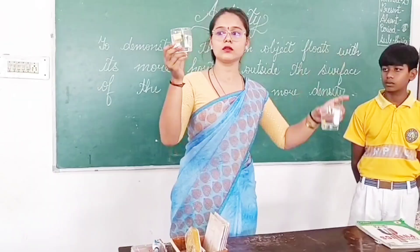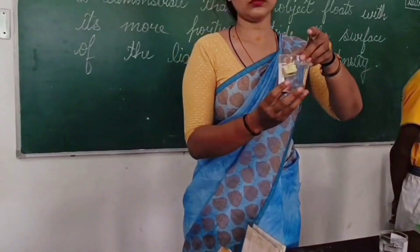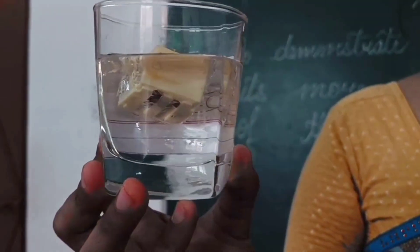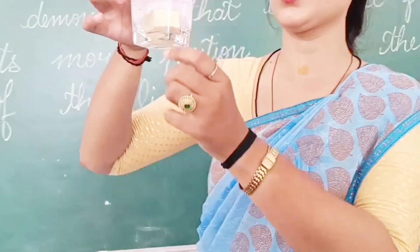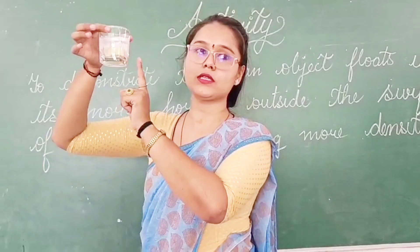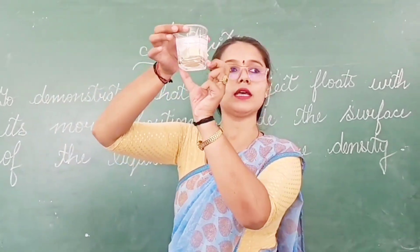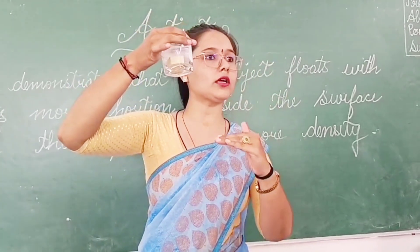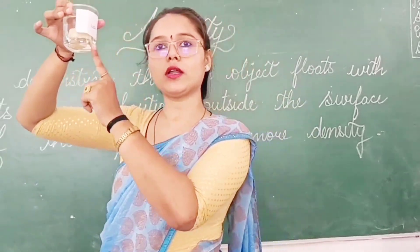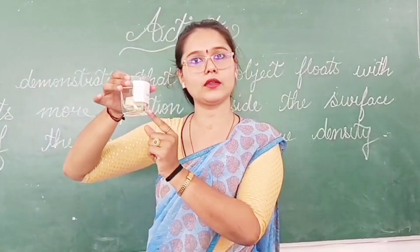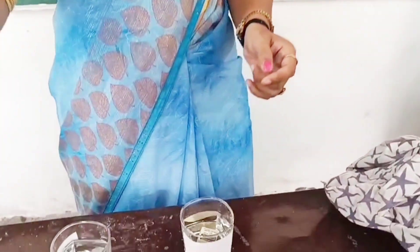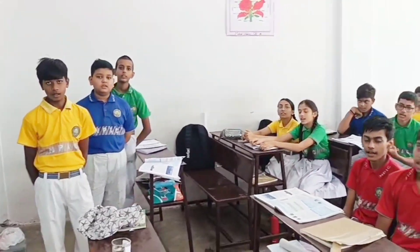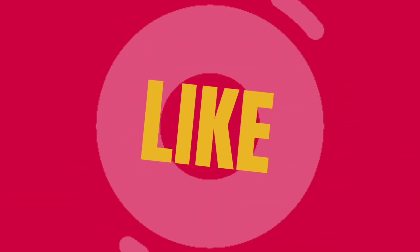Is this clear? Yes ma'am. See here — when we place the object in water it sinks, because water is less dense than glycerine. So more of the surface of the object is under the water rather than on the surface. Hence water is less dense than glycerine. Clear? Yes ma'am. Is the activity clear to all of you? Yes ma'am. Did you learn something from the activity? Yes ma'am.